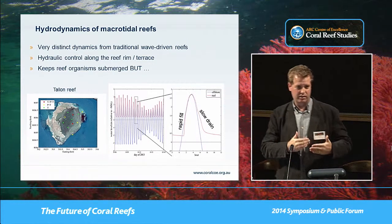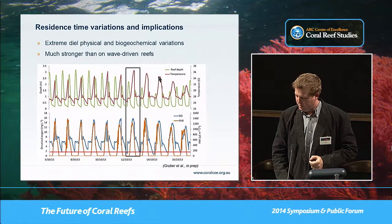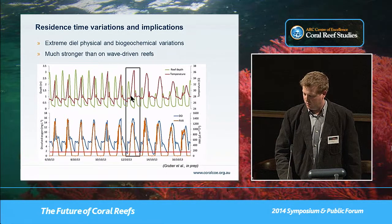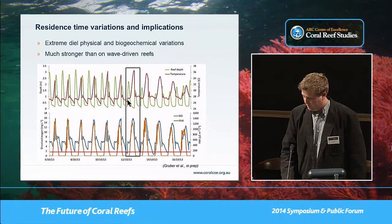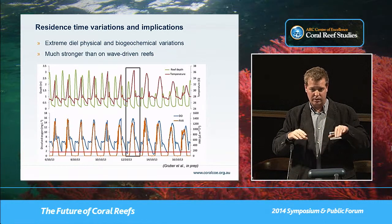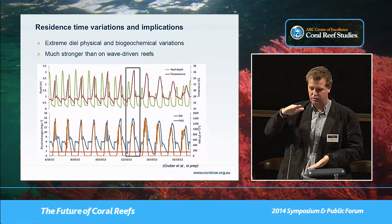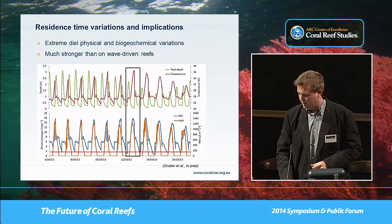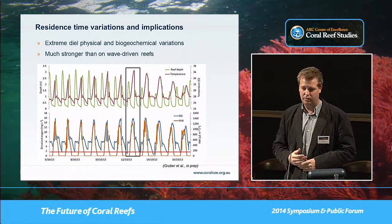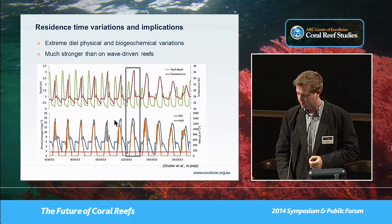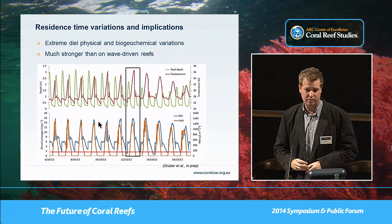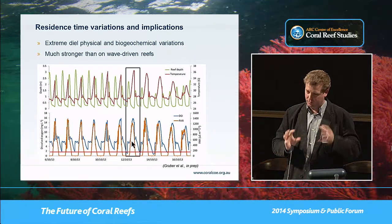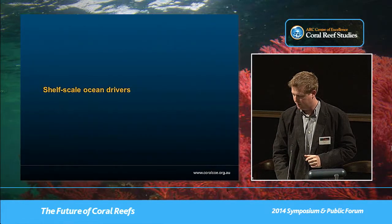The consequence of reducing water exchange is extreme physical and biogeochemical variations on these reefs. PhD student Renee Gruber's work shows that during periods of low tide at midday, temperature can rapidly increase from 26 degrees up to 36 degrees in a matter of hours. In terms of biogeochemistry, dissolved oxygen can range from 300% saturation during the day down to anoxic levels at night. The trapping of water in these pools drives extreme physical and biogeochemical variations.